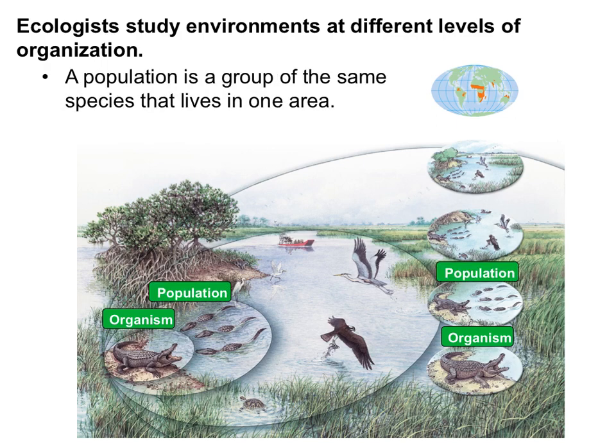The next level is a population. A population is a group of the same species that lives in one area. It's important with a population to define the area — you can't just say there are 300 alligators without specifying where. So here, there would be four alligators in this swamp — that is how you would define population.